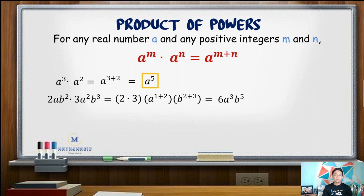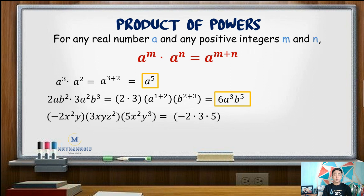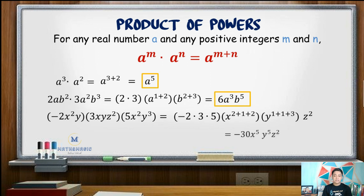Another example: multiply negative 2x squared y by 3xyz squared and 5x squared y cubed. First, multiply all the numerical coefficients: negative 2 times positive 3 times positive 5. Then add exponents for same variables. For x: x squared times x times x squared gives x to the 5th (2+1+2). For y: y times y times y cubed gives y to the 5th (1+1+3). For z: since only one term contains z, simply keep z squared. Final answer: negative 30x to the 5th, y to the 5th, z squared.